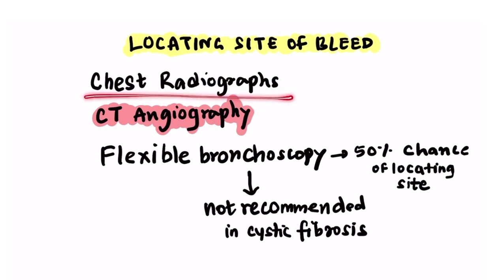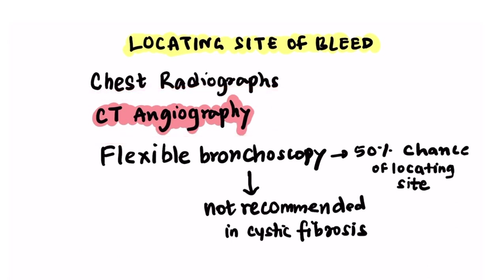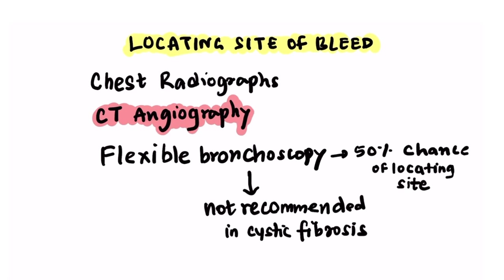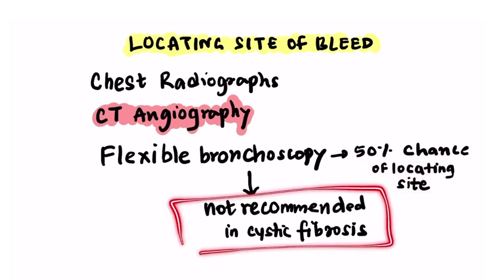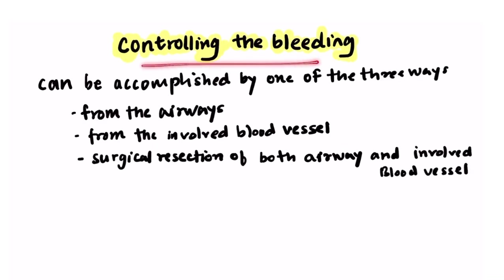CT angiography is very important and tells the accurate site of bleed. Flexible bronchoscopy can also be done and has a 50% chance of locating the site, but it is not recommended in cystic fibrosis as it can cause delay in therapy — in that setting, it is preferred to go directly with CT angiography. The third goal is controlling the bleeding, which can be accomplished in one of three ways: controlling bleeding from airways, from the involved blood vessel, or by surgical resection.